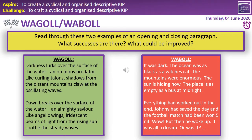What I'd like you to do now is read through these two examples of an opening and a closing paragraph. I want you to think about what the successes are and what could be improved. In the green box, you can see what a good one looks like, and in the red box, you can see what a bad one looks like. Have a little look through and then we're going to share some ideas.